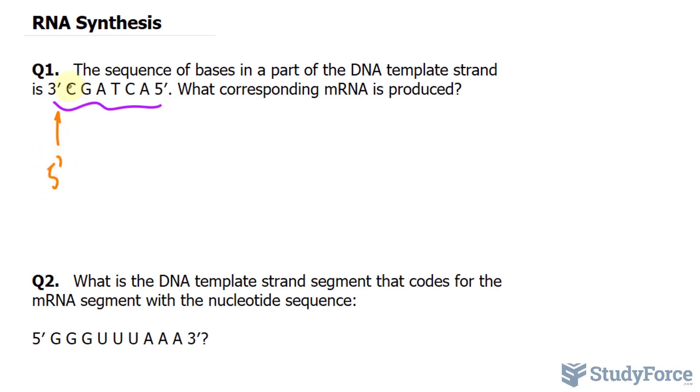So we're going to write down 5' and C is complementary to G. G is complementary to C. A is complementary usually to thymine in DNA, but in mRNA or RNA, we don't see thymine. Instead, we see uracil.